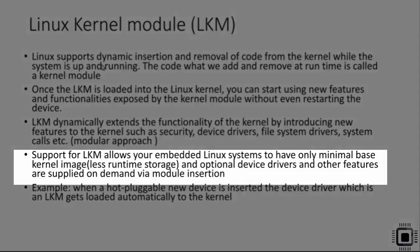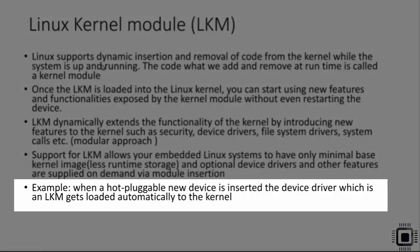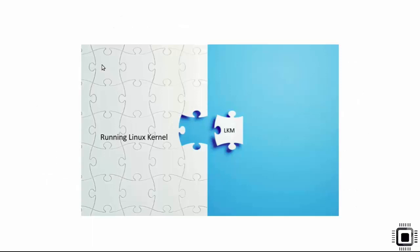Support for Linux kernel modules allows embedded Linux systems to have only a minimal base kernel image. Optional device drivers and other features are supplied on demand via module insertion. For example, when a hot-pluggable device such as USB is inserted, the device driver — which is a Linux kernel module — gets loaded automatically into the kernel. A device driver is a prime example of a Linux kernel module; it's like a plugin to the running Linux kernel.